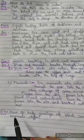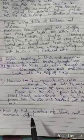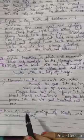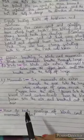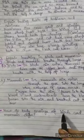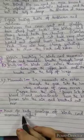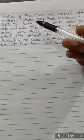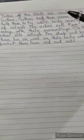Question 8: How do body coverings of birds and mammals differ? Bodies of birds are covered with feathers. Feathers keep them warm and help them to fly — that is the main role of feathers.